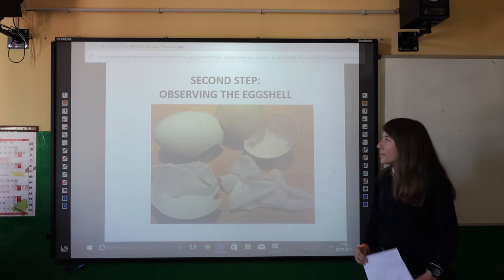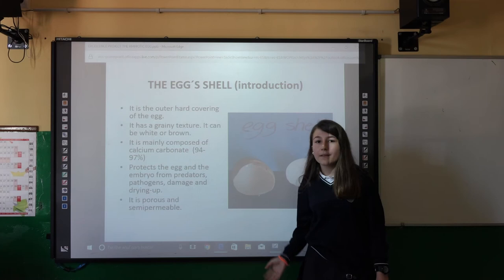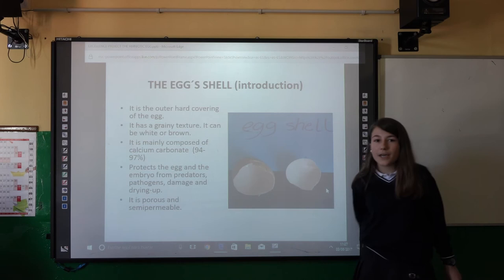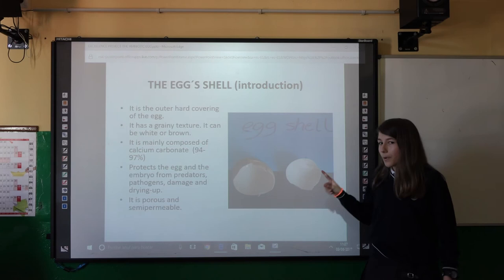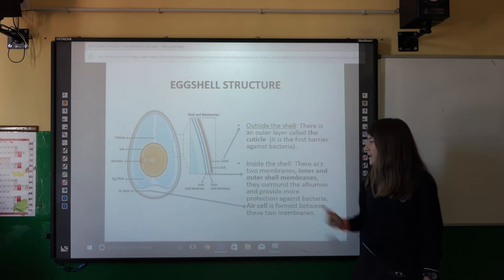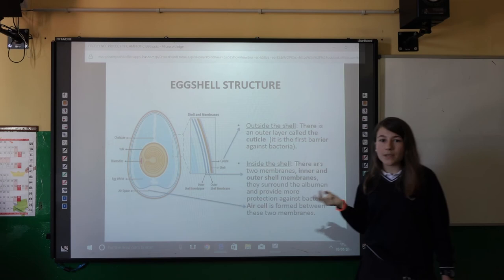Let's continue with the second step: observing the shell. The egg shell is the outer hard covering. It can be yellow or white and is composed of calcium carbonate. It protects the egg and the embryo from pathogens, predators, damage, etc., and it is porous and semi-permeable. Outside the shell we can find the cuticle, inside the shell we can find the inner and outer membranes, and the air cell is located between these two membranes.